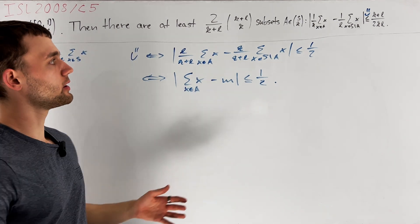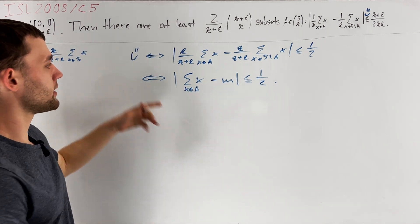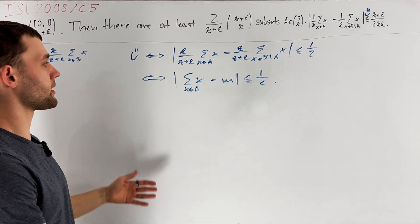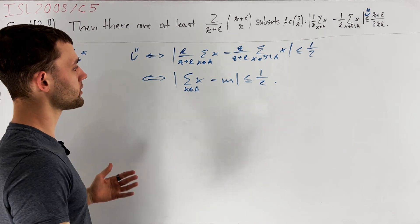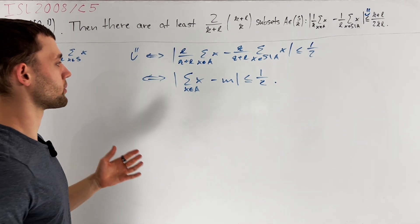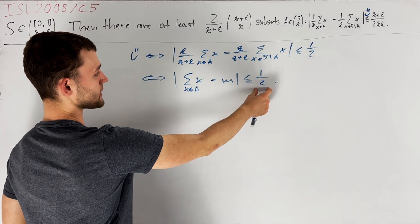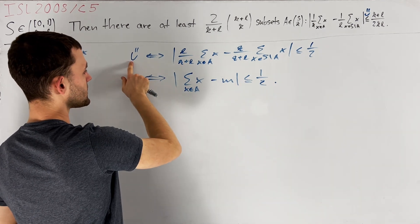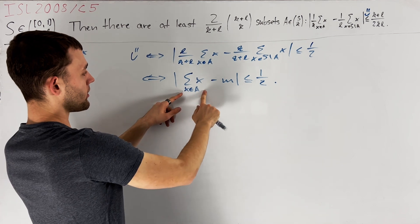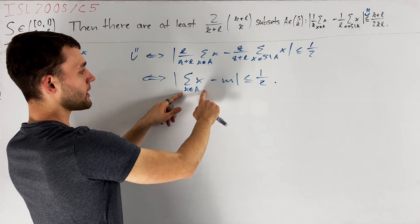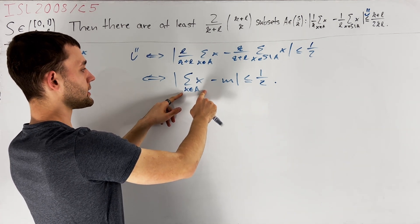Although it might have initially seemed like rearranging Smiley like this will not really give us anything new since this is just an equivalent reformulation, I do think that it was worthwhile because now we see that this upper bound is just a half. In particular, for Smiley to hold, the sum of elements in A must lie in an interval of length precisely one.